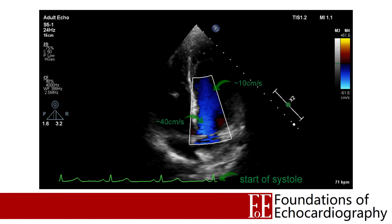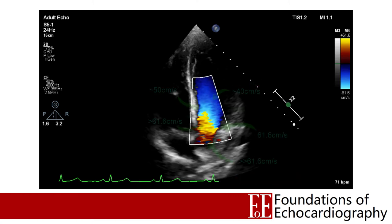Here we can see that systole is just beginning — we're just past the QRS complex on the ECG — and blood moving from the LV towards the aorta is displayed as a dark blue, initially moving relatively slowly. Because this is a healthy heart, the pressure inside the left ventricle rapidly increases and the velocity of blood leaving the LV starts to accelerate. As the blood is funnelled into the left ventricular outflow tract, it has a smaller and smaller area to pass through and so must accelerate. In the very next frame the dark blue gives way to brighter blue representing faster moving blood, and then this bright blue area suddenly flips into bright yellow — the blood has now accelerated beyond 61.6 cm per second and is now travelling too quickly to be correctly identified.